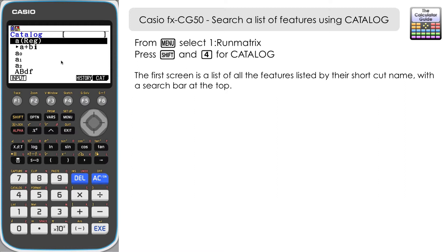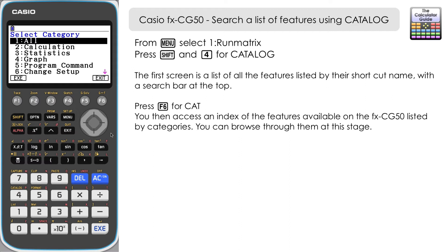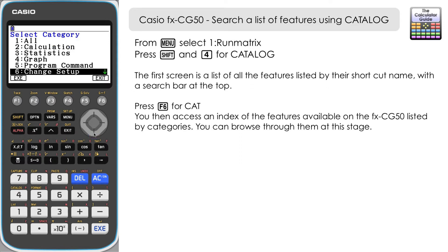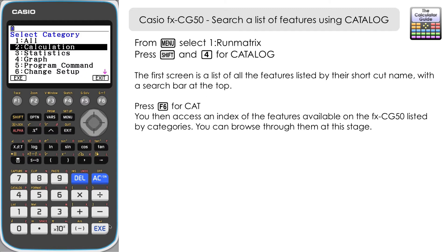I'm going to show you the catalogue menu and the features listed by category. If you press F6 for Cat, you can see that the features available on the FX CG50 are broken into categories. We've got Calculations, Statistics, Graph and so on. It's quite an extensive list — I'm not going to go through them all in this video, but I'll leave you to browse those for yourself.